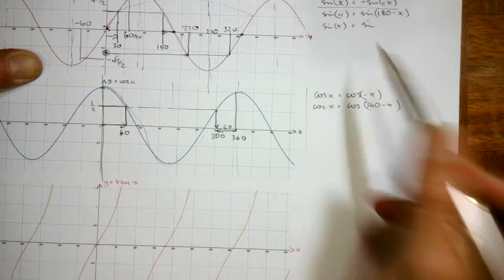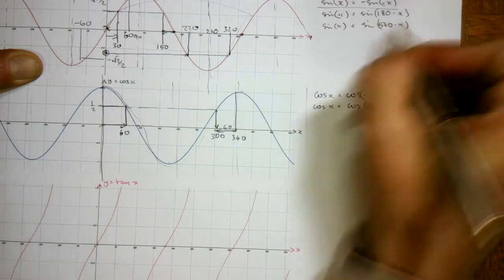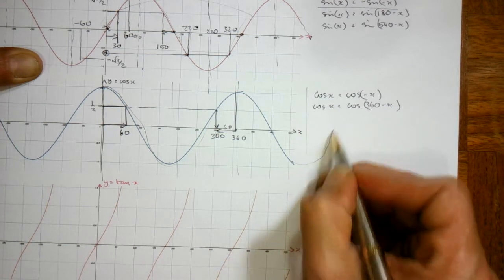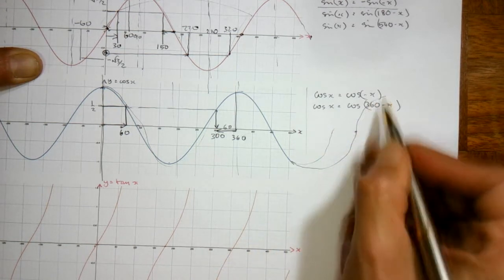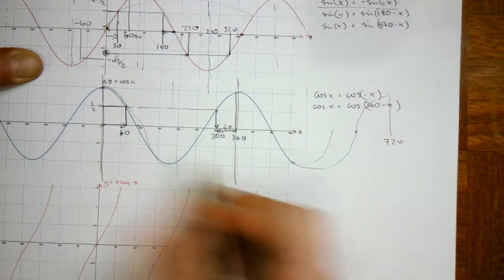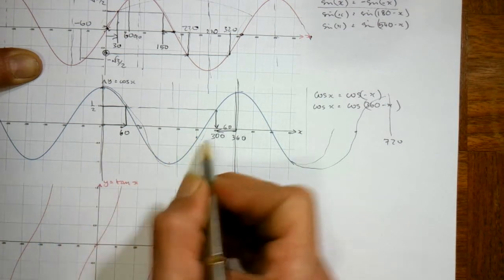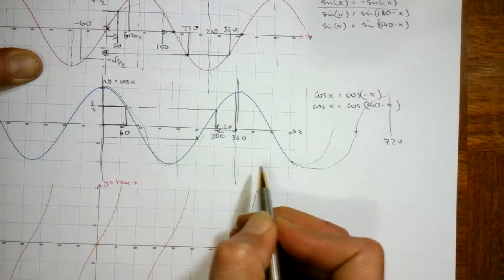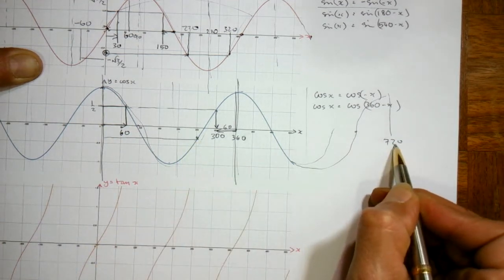And we can choose similar like we did up here. We had 540 minus x is the same as sine of x. The cos graph, if we continue that, we get around to 720. So a line of symmetry of 360. If we choose an angle of 250, or thereabouts, 250 less than 720 is 470.